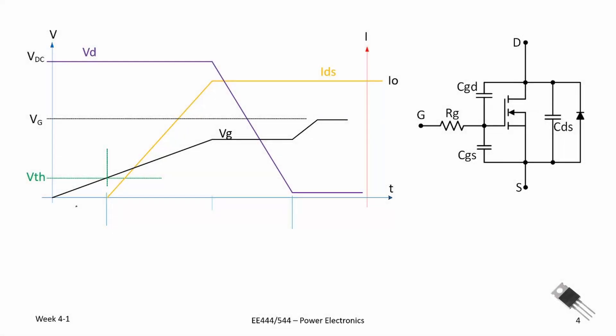I'm going to list three different times: T1, T2, and T3. The total turn-on time, which I'll list as T sub on, is equal to T2 plus T3.